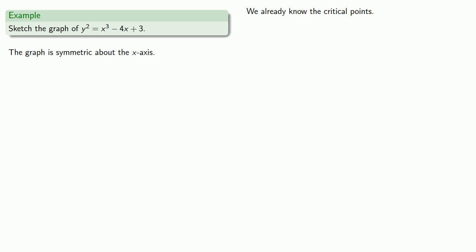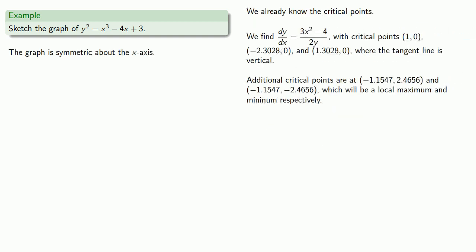We've already found the critical points for this function, which give us a starting point for the graph. We know that at the critical points (1, 0), (-2.3028, 0), and (1.3028, 0), the tangent line is vertical. So let's graph those points and a short section of the tangent line, and we'll end up with a graph that may look something like this.